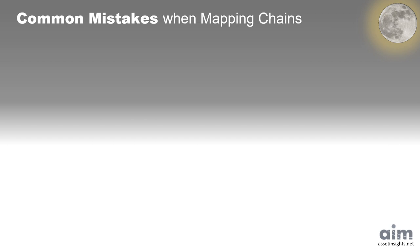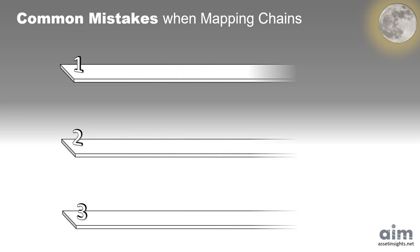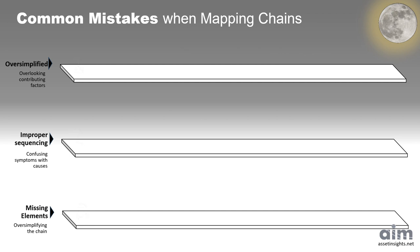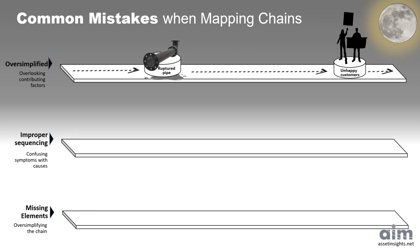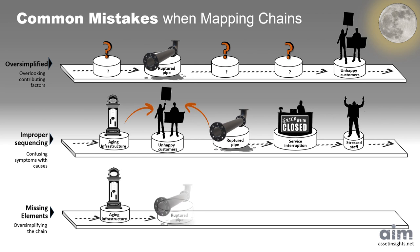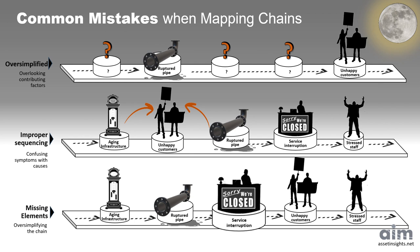If causal chains are not mapped correctly, we risk misunderstanding how one event leads to another. Three common mistakes often occur: oversimplifying the chain, misordering the sequence, or overlooking key links. In risk management, these errors can obscure root causes and result in flawed decisions. Let's explore how to avoid these pitfalls and build clearer, more effective causal chains.